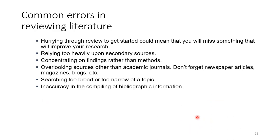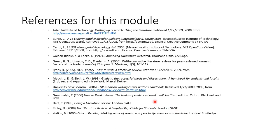There are certain common errors in review of literature: hurrying through the review to get started, which means you could lose many things; relying too heavily upon secondary sources; concentrating on findings rather than methods; overlooking sources other than academic journals — you should also look into newspaper articles, blogs, books, and magazines; searching too broadly or too narrowly; and inaccuracy in compiling bibliographic information. If you have any questions or queries related to the topic, you can inbox me and I will get back to you. I hope I have been able to solve some aspects for you. Thank you very much.